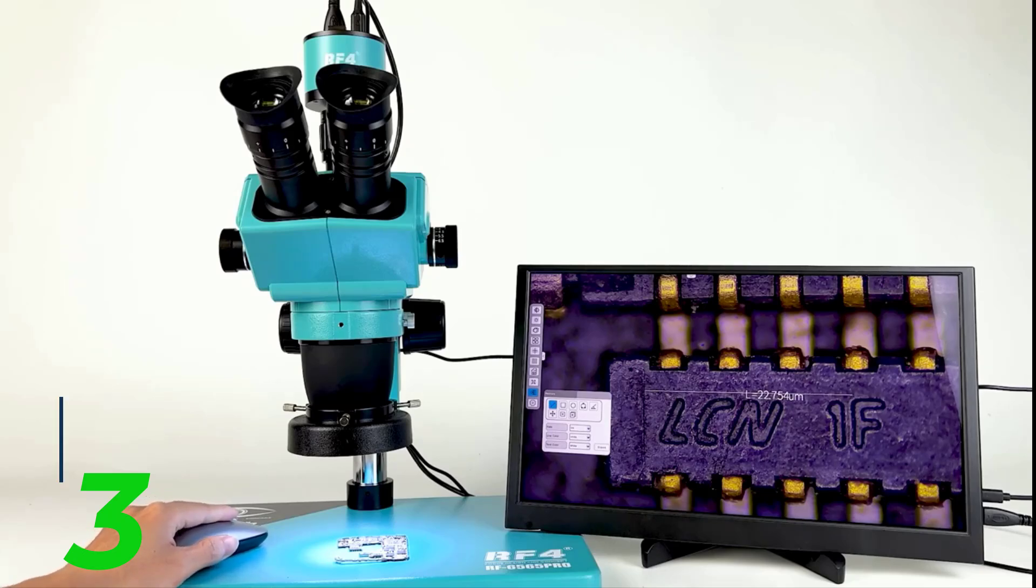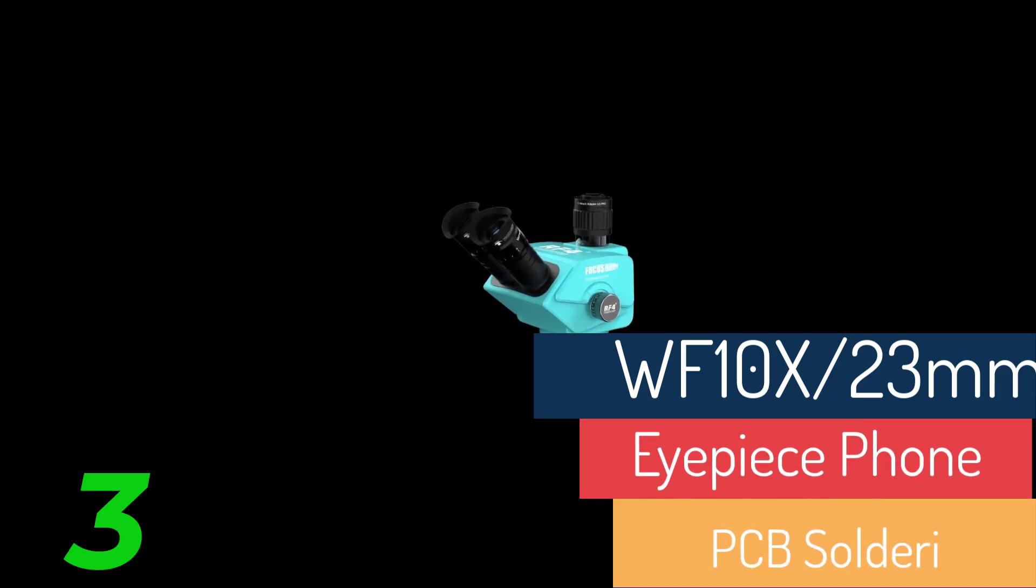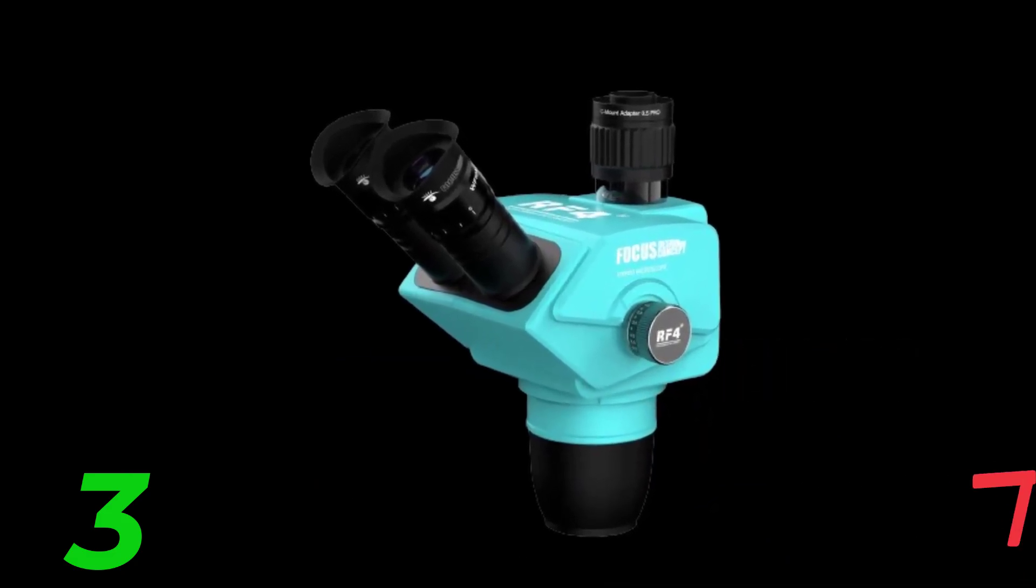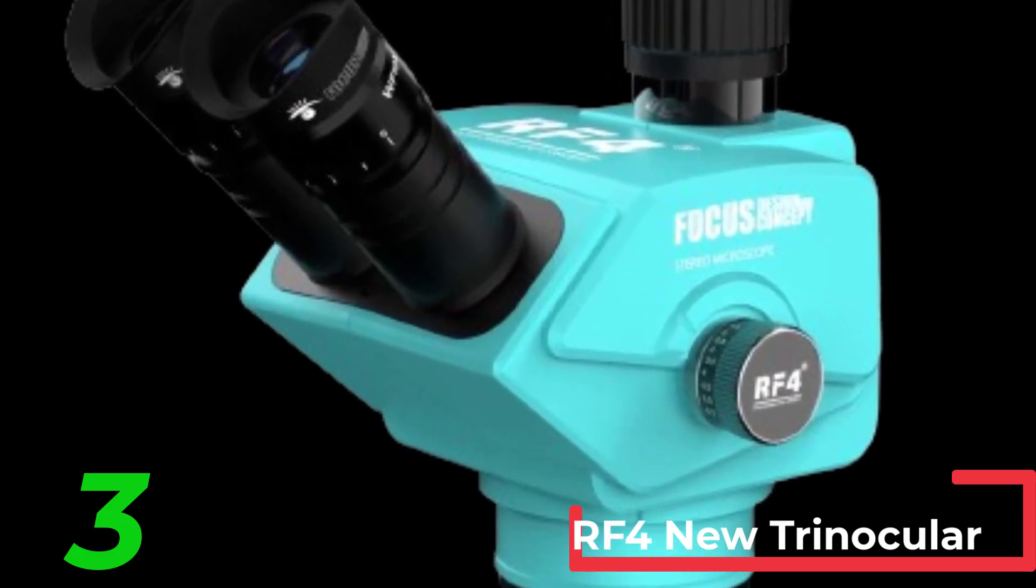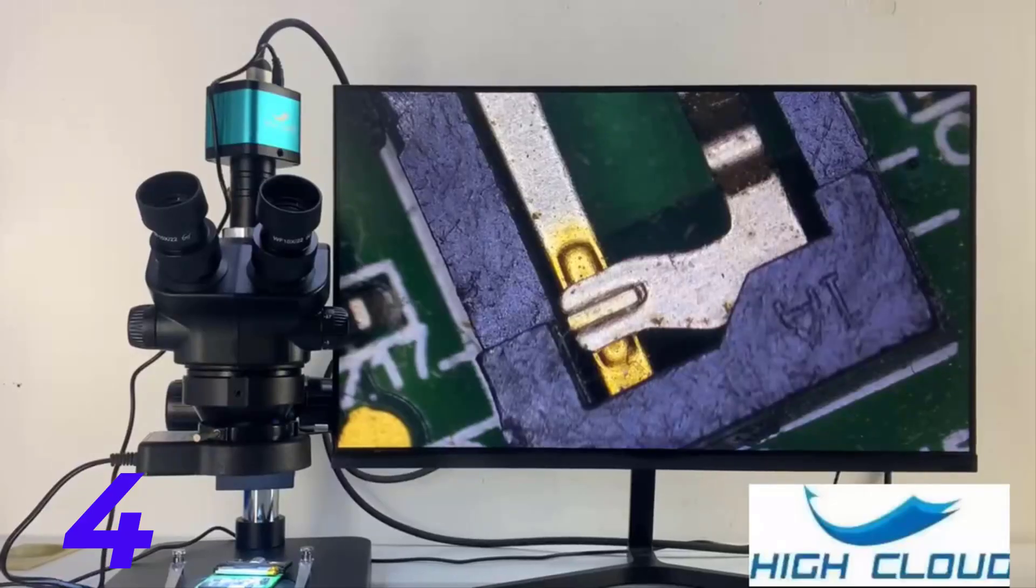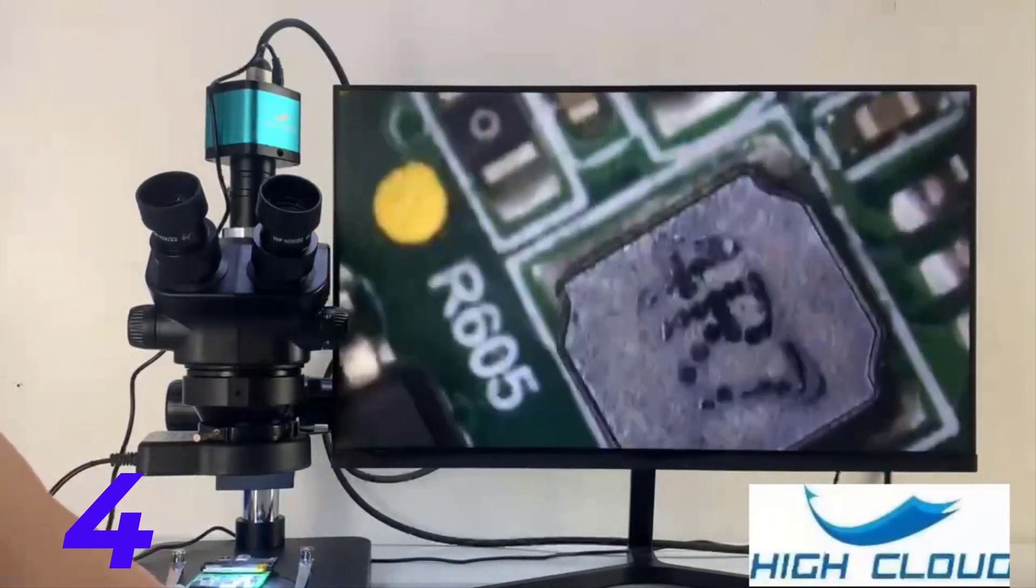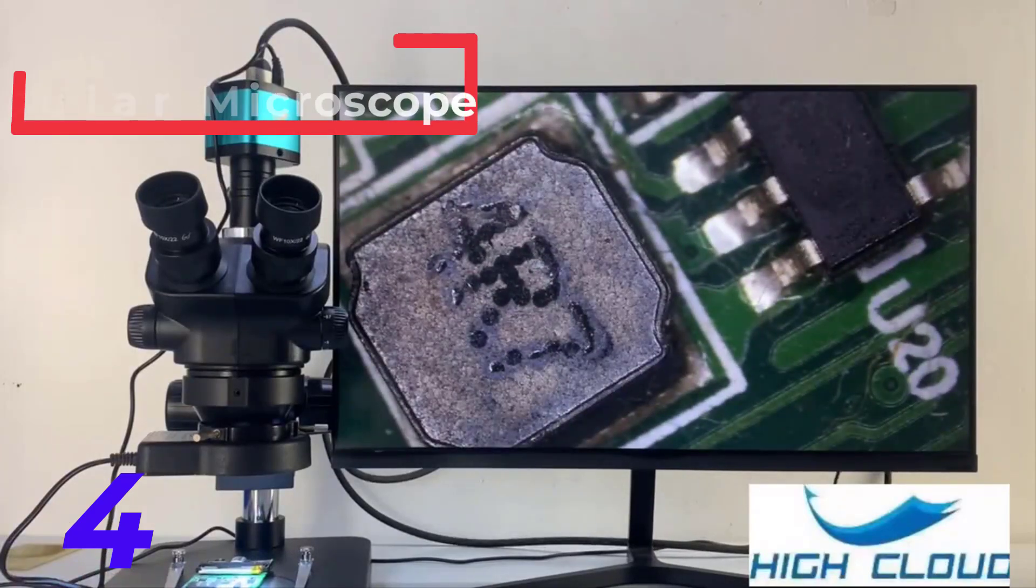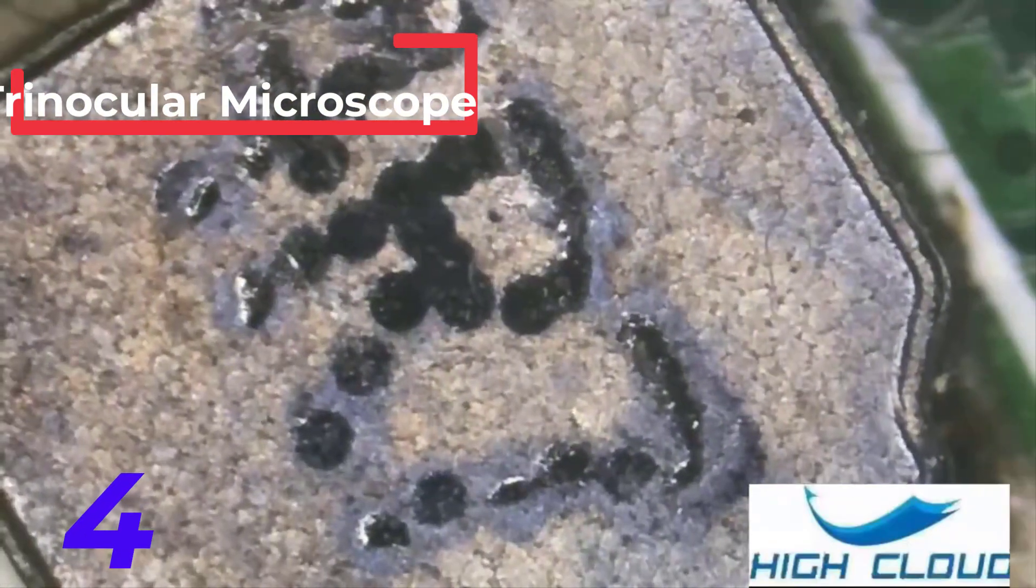Exploring the 1080p 48 Megapixel 2K 4K HDMI USB VGA Video Camera Microscope Set. In the world of precision electronics, biological research, and various industrial applications, having a reliable and versatile microscope is essential. The 1080p 48 Megapixel 2K HDMI USB VGA Video Camera 50x-100x Simul Focal Stereo Trinocular Microscope Set offers an advanced solution for professionals in these fields. This comprehensive set combines high-resolution imaging with a range of connectivity options, making it a versatile tool for detailed observation and analysis.